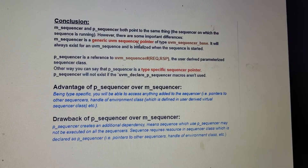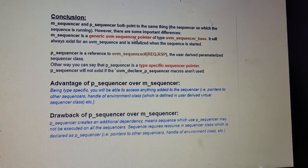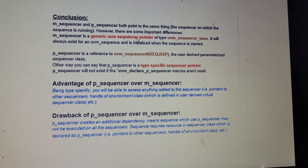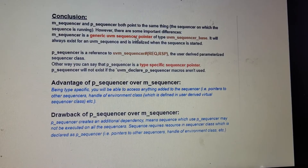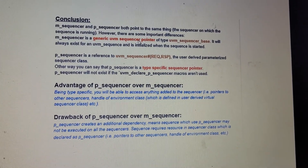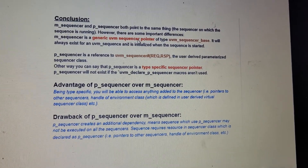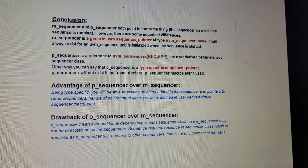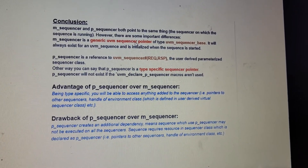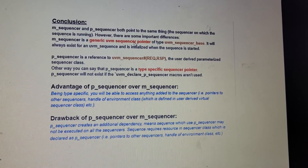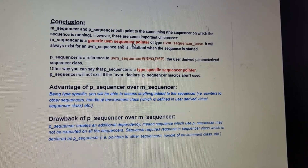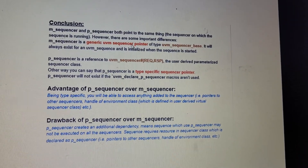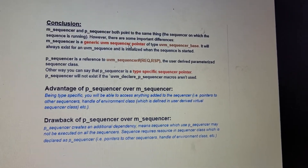In conclusion, m_sequencer and p_sequencer both point to the same sequencer but differ in type. m_sequencer is a generic uvm_sequencer pointer of type uvm_sequencer_base — it always exists for a uvm_sequence and is initialized when the sequence is started. p_sequencer is a reference to the uvm_sequencer parameterized with request and response — the user-derived parameterized sequencer class — making it a type-specific sequencer pointer.